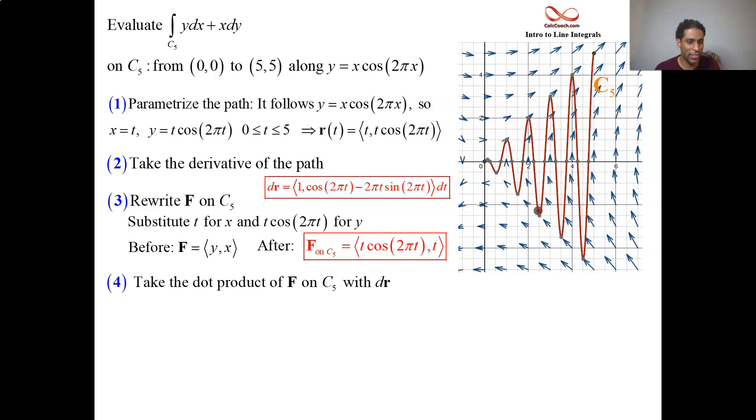And you take the dot product between these two in step four. So the t cosine 2πt gets dotted or multiplied by 1. The t gets multiplied by the derivative part. We end up with 2. Why is that 2 there? Don't know why that 2 is there. That 2 shouldn't be there. That makes no sense for that 2 to be there. Sorry about that. It's not going to make a difference.